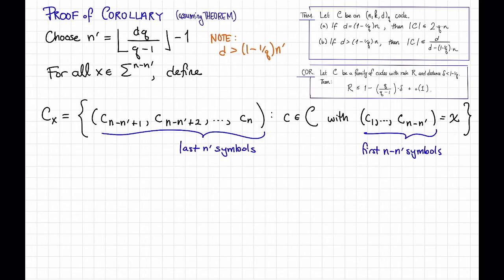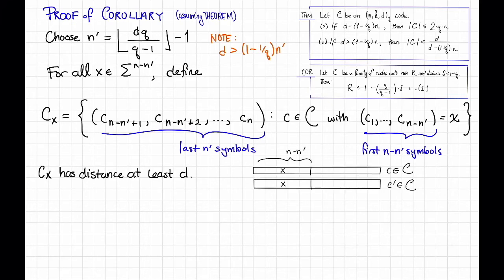Now, I claim that c sub x has distance at least d. To see why, let's draw a picture. So let's consider two code words in c, c and c prime, that both have the same beginning, x. That means that this thing here is a code word in cx, and this thing here is also a code word in cx. And I claim that these two things must have distance from each other at least d. But that's true because the original two code words, c and c prime, had to have distance from each other at least d, because c has distance d. But if these original two things must have distance d, and they agree here, then all the distance must be coming from this end part, and so the corresponding code words in cx also have distance at least d from each other.